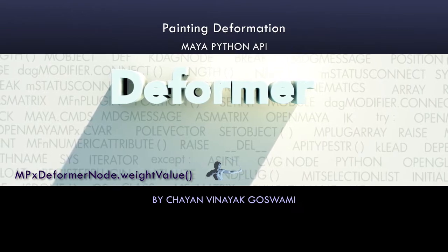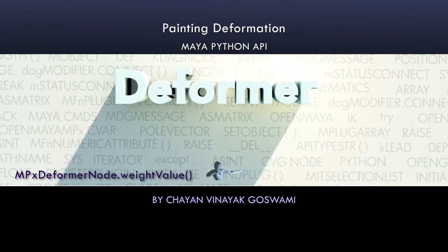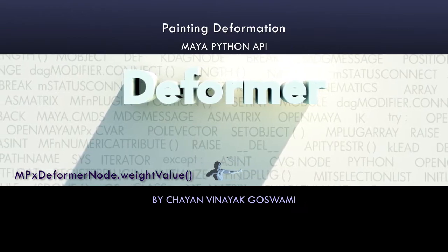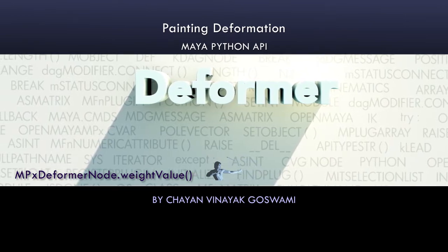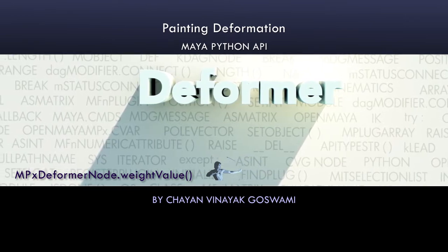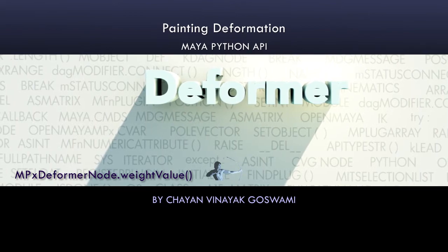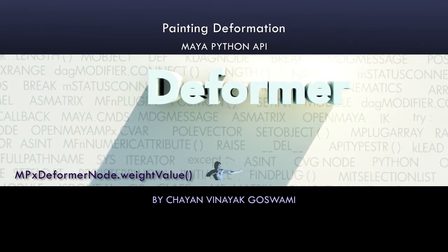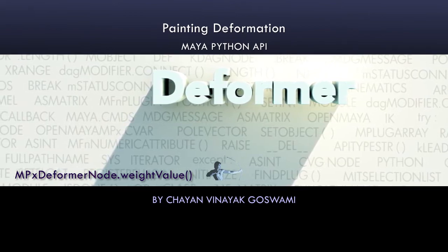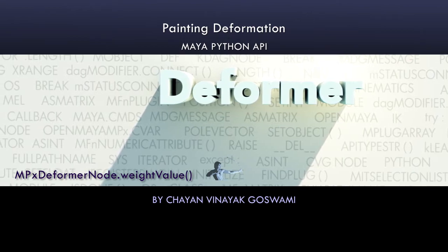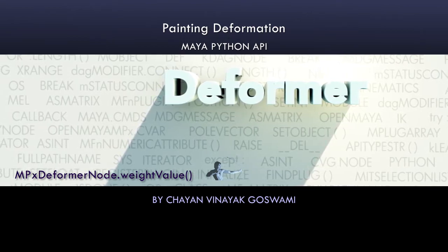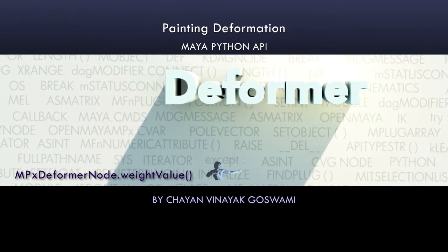Hello. In this video we will learn the technique of making your deformer paintable so that you can start painting your deformation on the meshes. This process is very simple and it's a two-step process, because most of the things are already there which we have not explored yet. So first let's take a look at what we are going to do in these two steps.